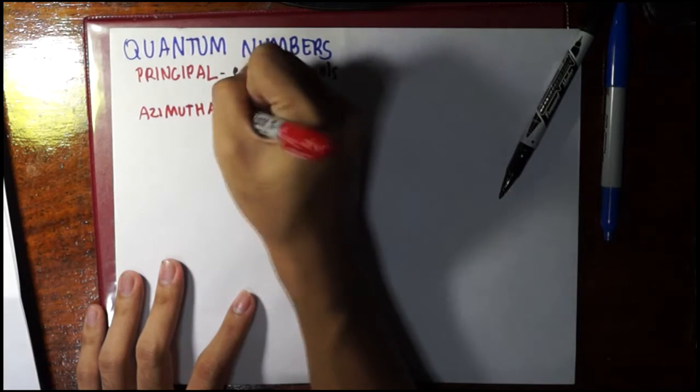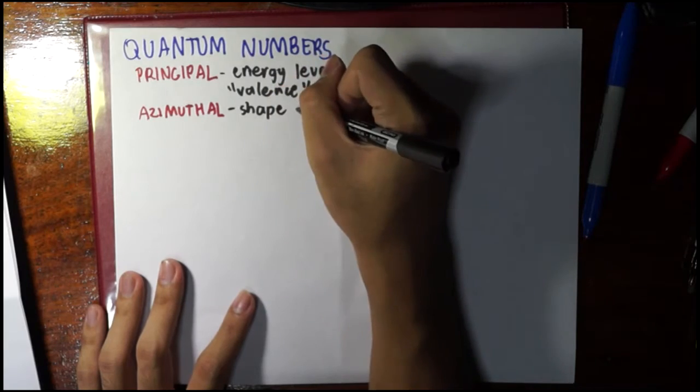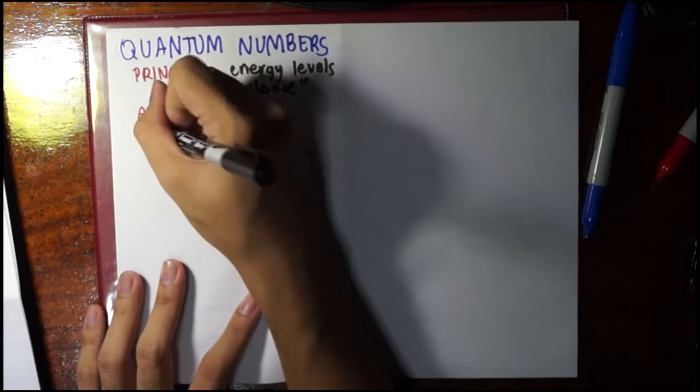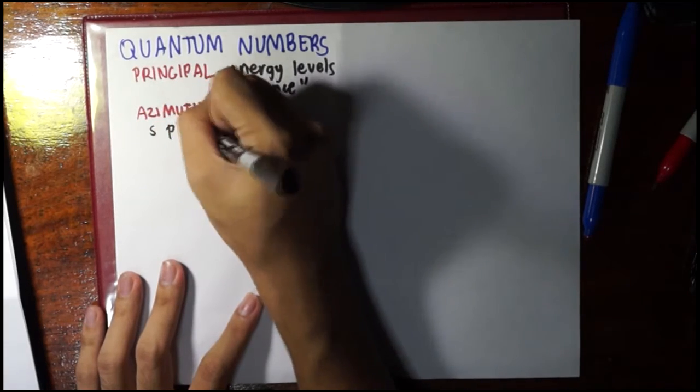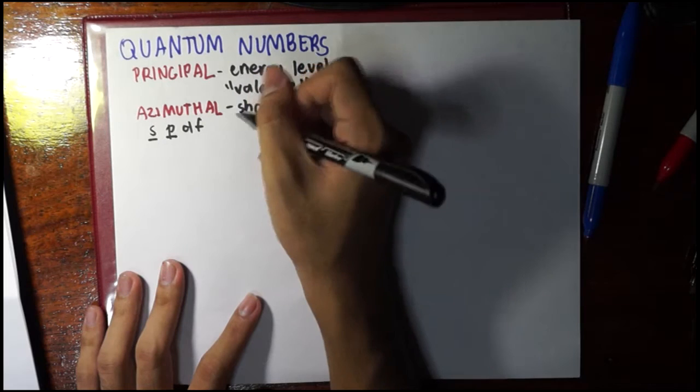The next would be the azimuthal quantum number. This is going to talk more about the shape of a particular orbital. For example, we have the s, p, d, f, and we're going to talk about s and p all the time in organic chemistry.